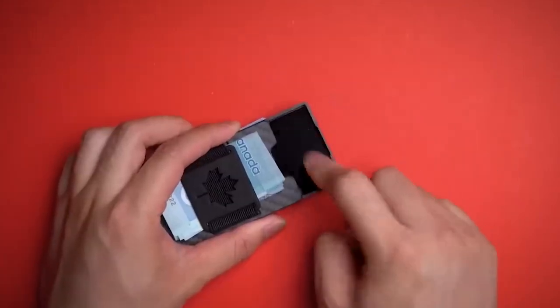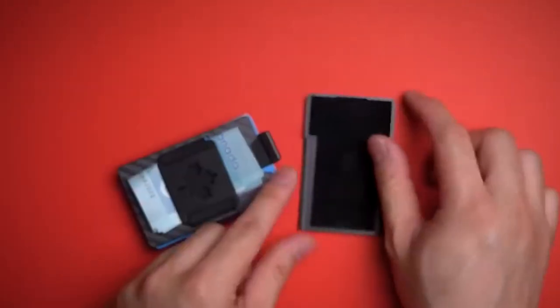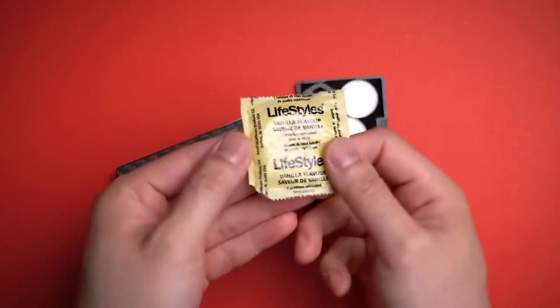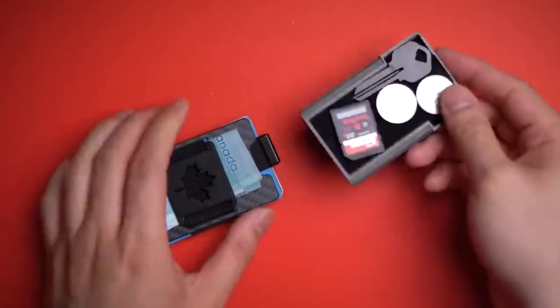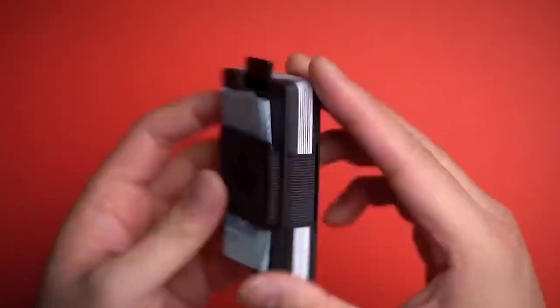The wallet also comes with RFID protection, ensuring your safety from unwanted scans. It even includes a coin compartment for storing loose change or other small items, and a cash clip for easy bill handling.